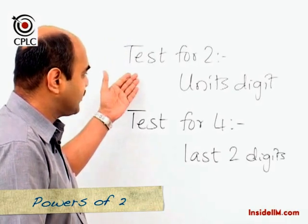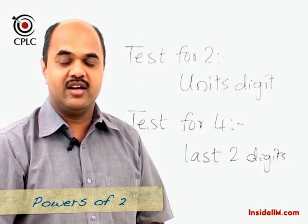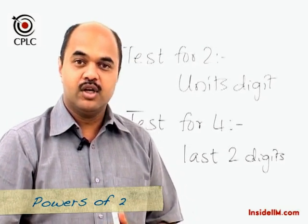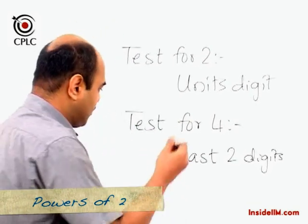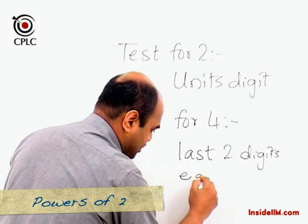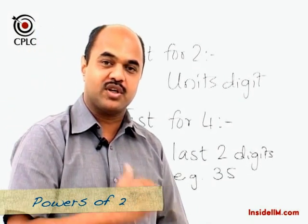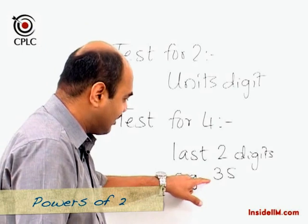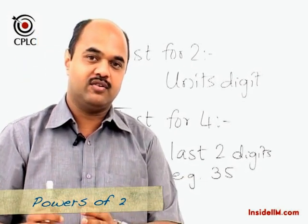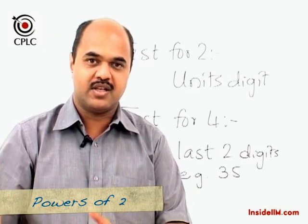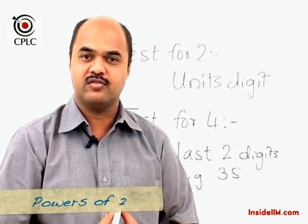Just as we check the remainder test for two, we also check the remainder test for four. We don't need to divide the entire number by four — we just divide the number formed by the last two digits by four. For example, if the last two digits form 35, the remainder when dividing 35 by four is three. Hence, even in a 10-digit number where 35 forms the last two digits, that number divided by four would give a remainder of three.